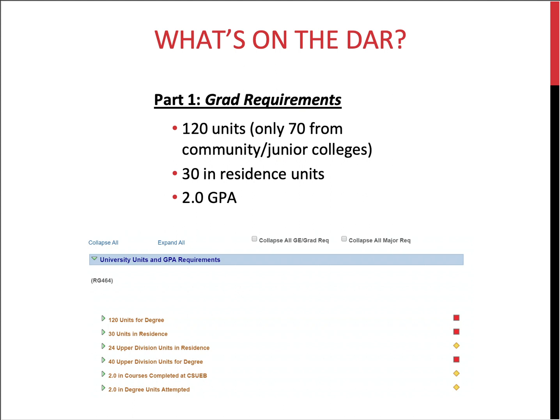To receive a degree from CSU East Bay, you'll need to complete at least 30 units in residence — meaning through our university. You will also need to maintain an overall 2.0 GPA and a CSU East Bay 2.0 GPA.